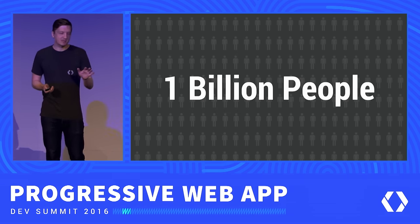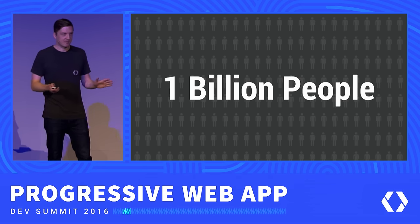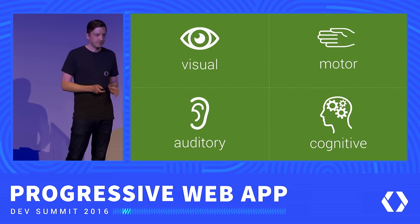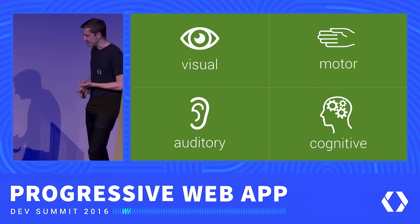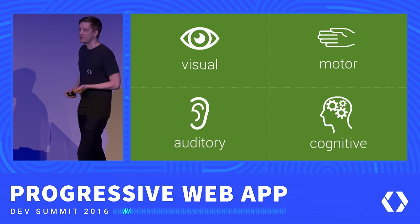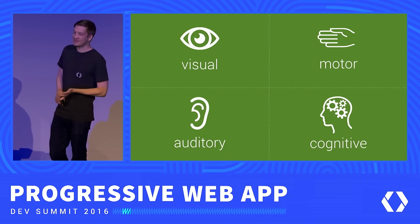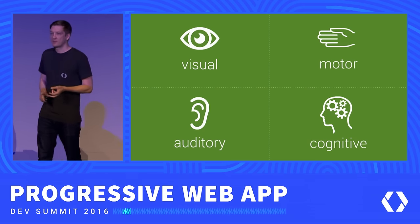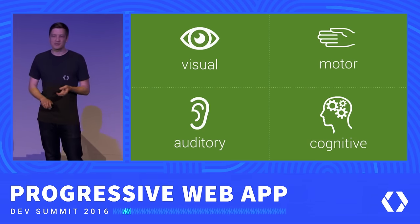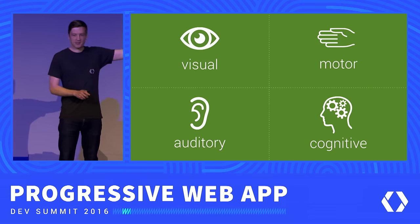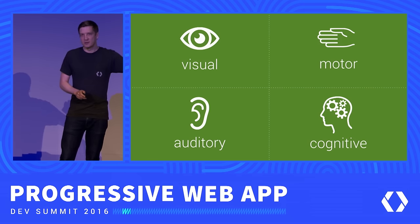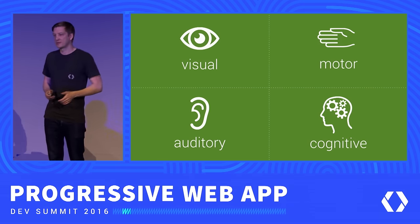We can roughly split these into about four different categories of impairment: those affecting visual senses, those affecting motor and dexterity, auditory senses, and cognitive senses. I want to cover each of these individually, starting with visual senses.